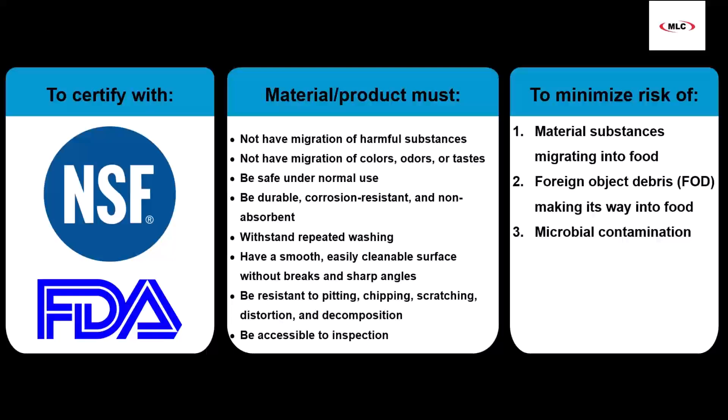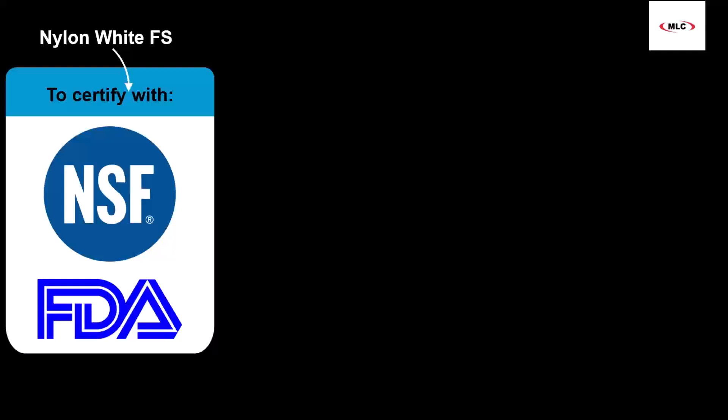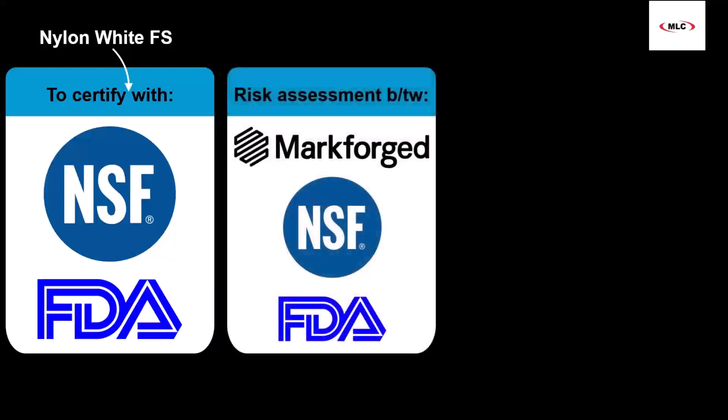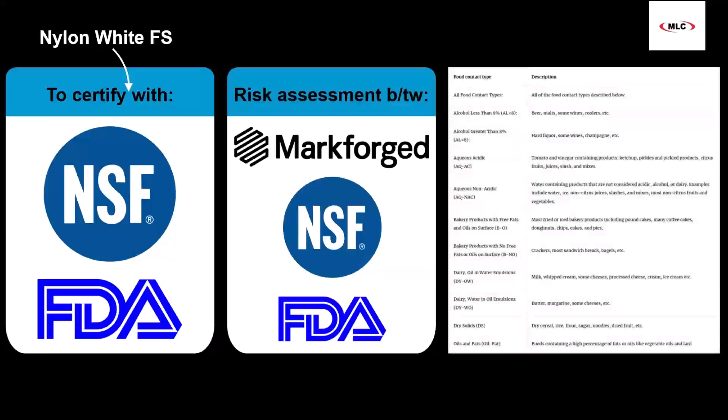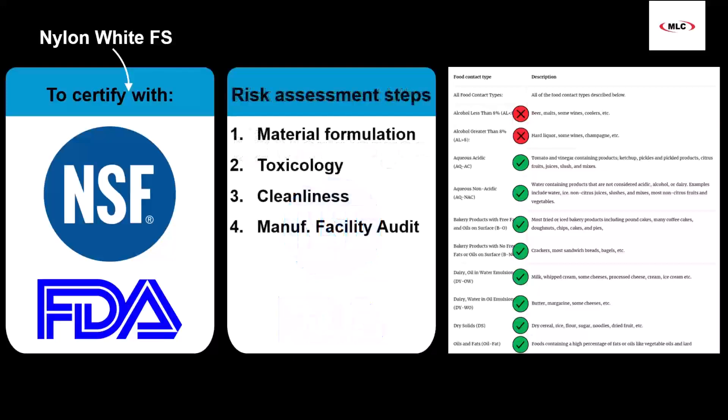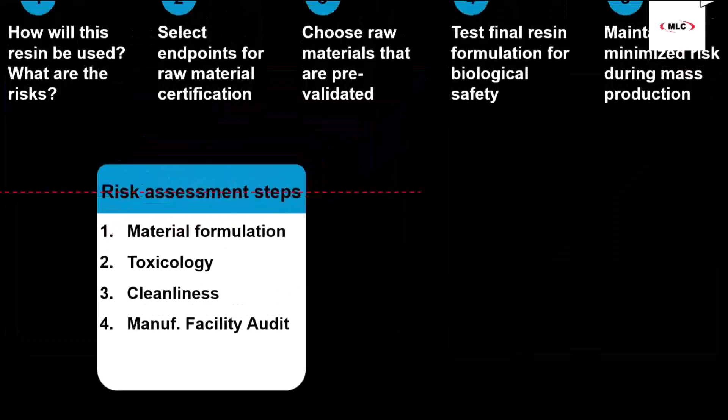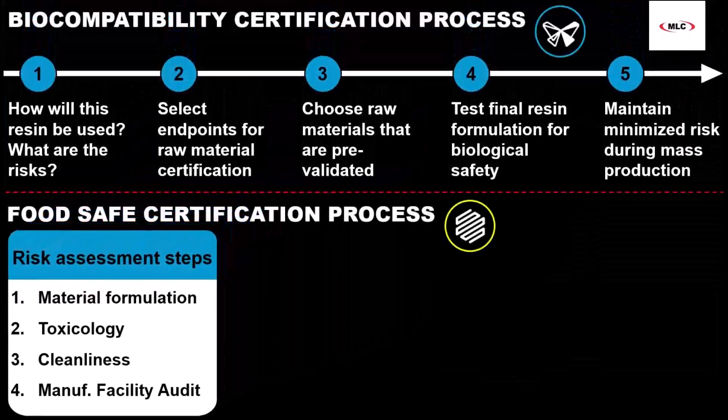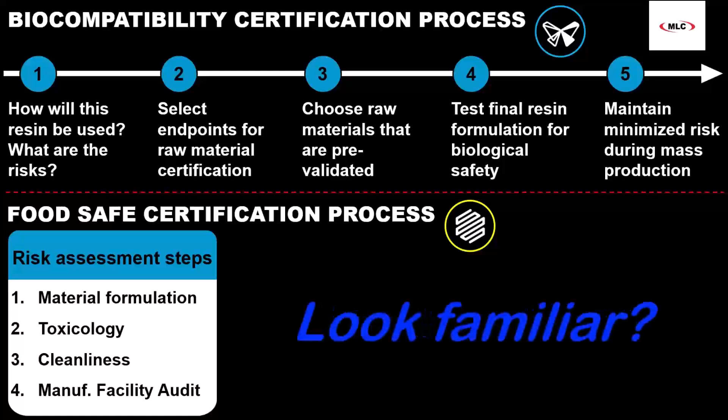Just like Formlabs, Mark Forge had to undergo a series of similar risk assessment stages with the NSF and FDA for their nylon-white FS to be certified safe for food contact, passing all food contact categories except alcohol, which is a unique category anyways. These stages include reviews on formulation, toxicology, cleanliness, and a manufacturing facility audit. This probably sounds familiar to what we just talked about with Formlabs because the food safety risk assessment process is basically the same as the biocompatibility process.